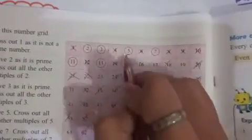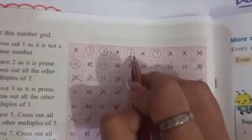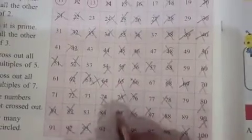Now 4 is already crossed. Move to 5 and cross all multiples of 5 - numbers ending in 0 or 5. Now 6 is already cut. Move to 7 and cross all multiples of 7: 14, 21, 28, 35, 42, 49, 56, 63, 70, 77, 84, 91, 98.